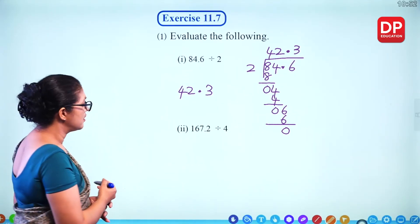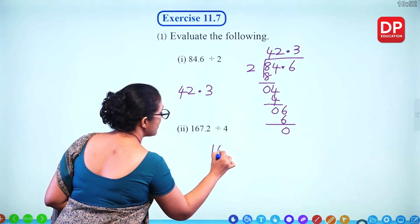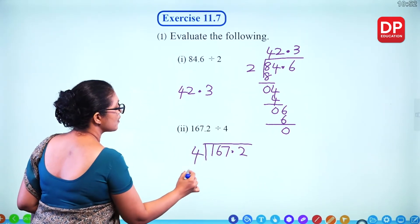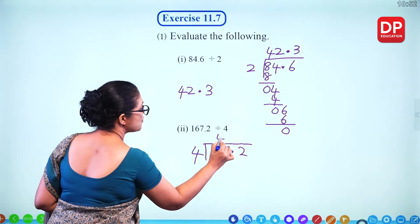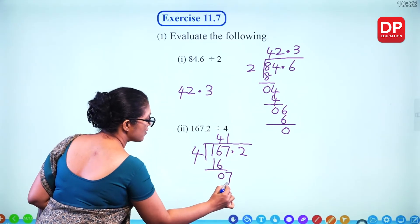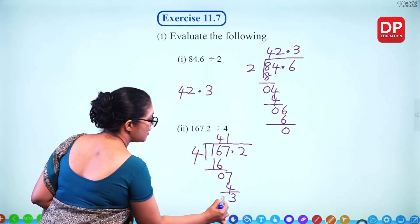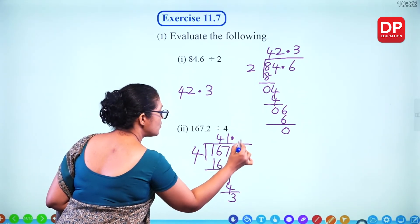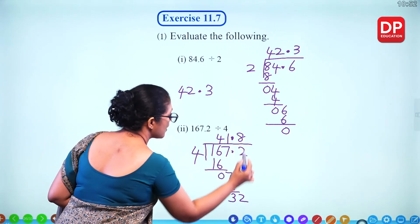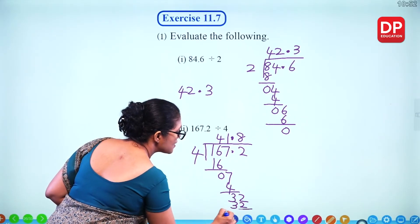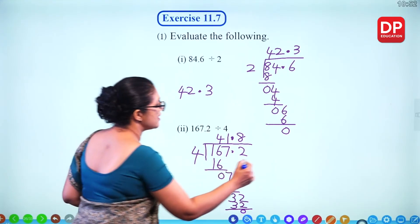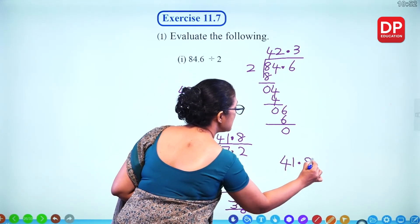For 167.2 divided by 4: for 1 nothing, 4 times 4 is 16 (0 remaining). For 7, that is 1 (3 remaining). Take 2: 4 times 8 is 32 (0 remaining). The answer is 41.8.